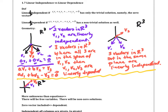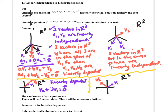In R2, if I have one vector and another vector that are multiples of each other, they are linearly dependent. I can take V2 and subtract out two V1s — if V2 is twice as long as V1 — and get the zero vector. If I have two vectors that are multiples of each other, they will be linearly dependent. If V1 and V2 are not multiples of each other, they would be independent.